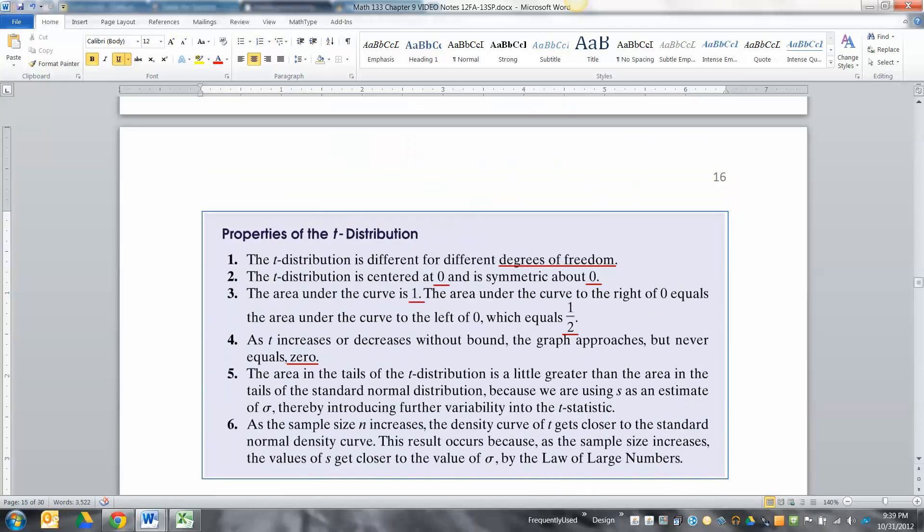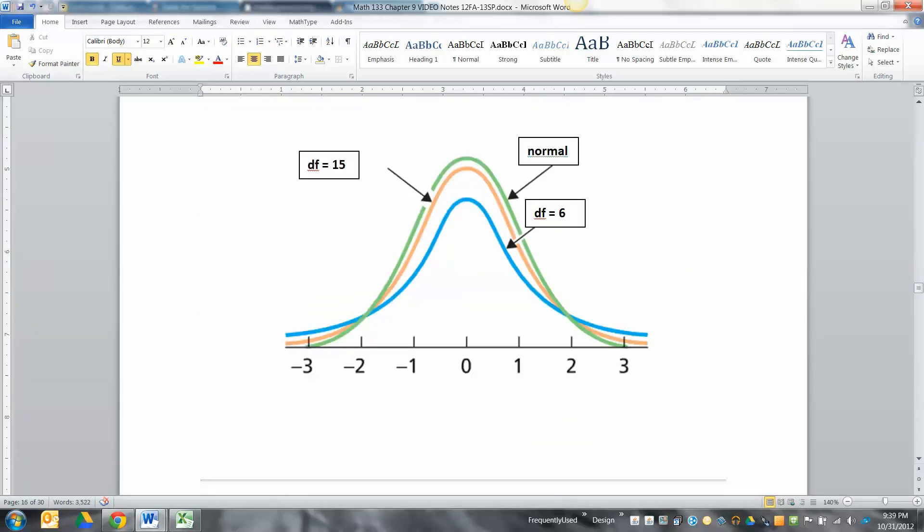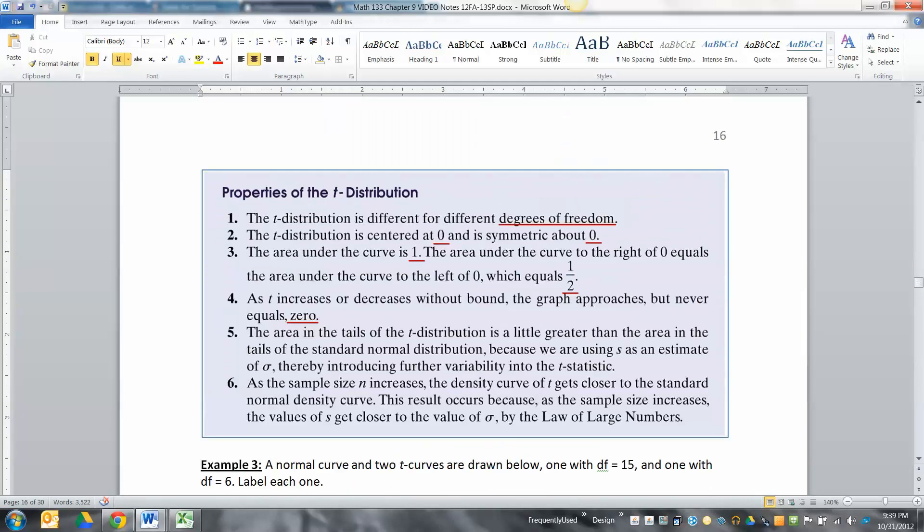These are the properties of the t-distribution. There's different t-curves for every different degree of freedom - infinitely many t-curves. The t-distribution is centered at zero and is symmetric about zero, so it looks a lot like the normal curve. The area under the whole thing is one, so the area to the right of zero is a half, the area to the left of zero is a half, just like the normal curve.